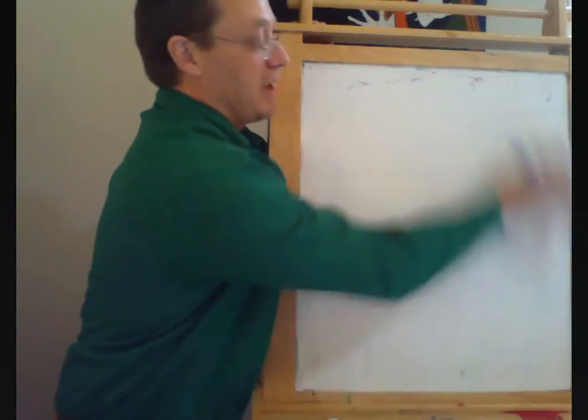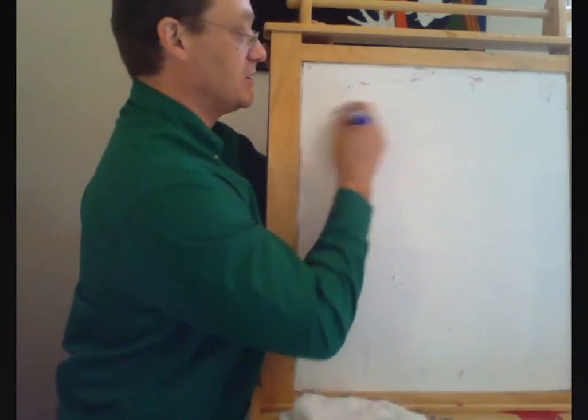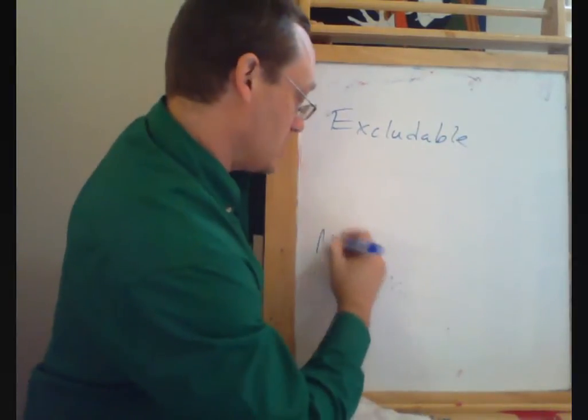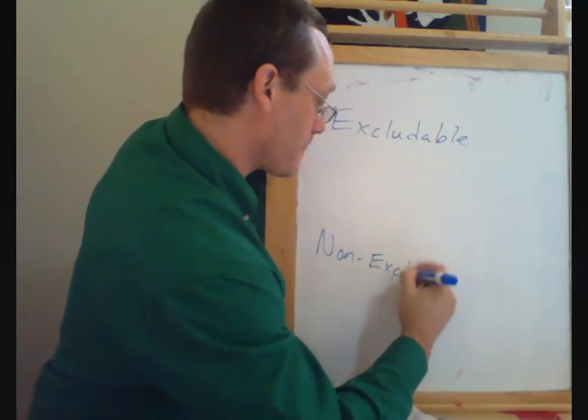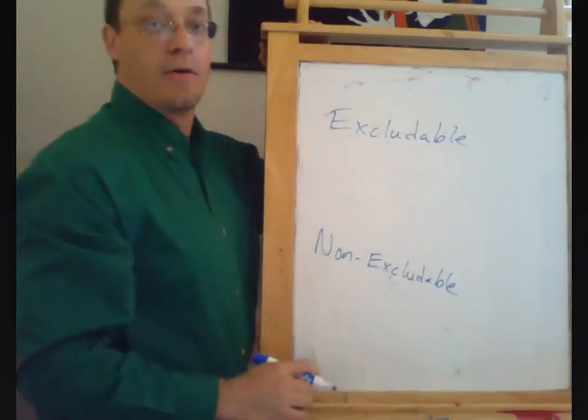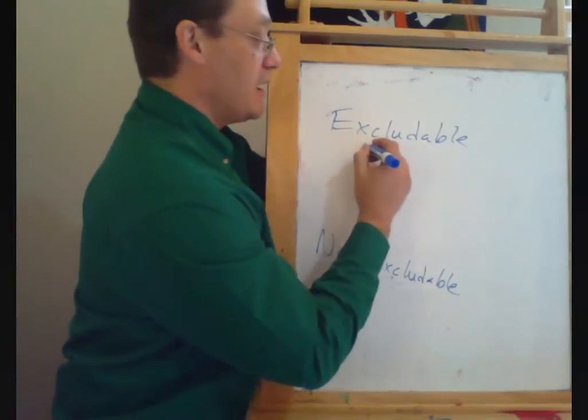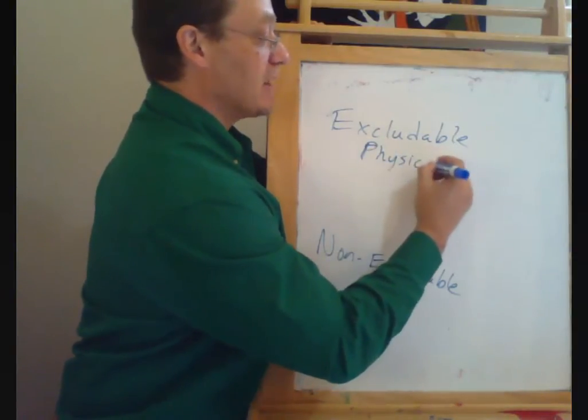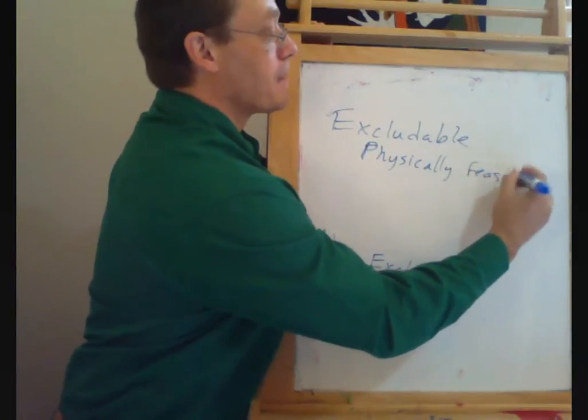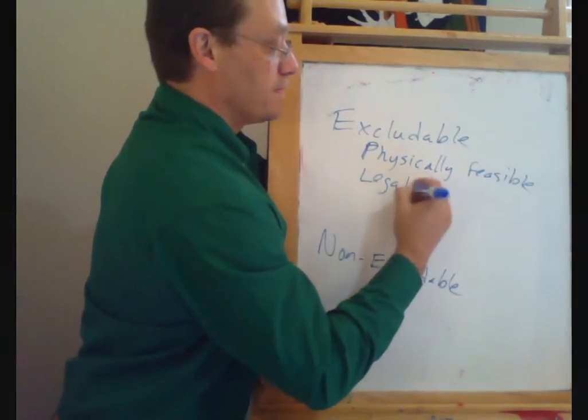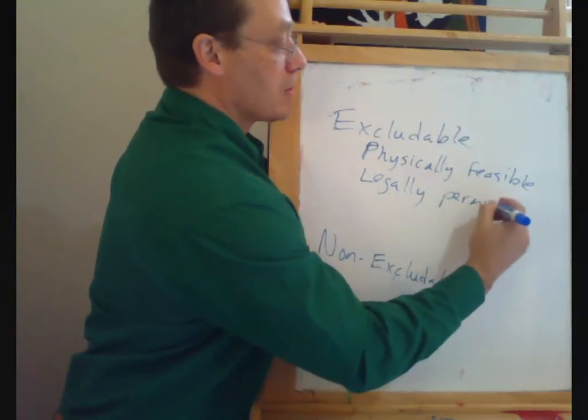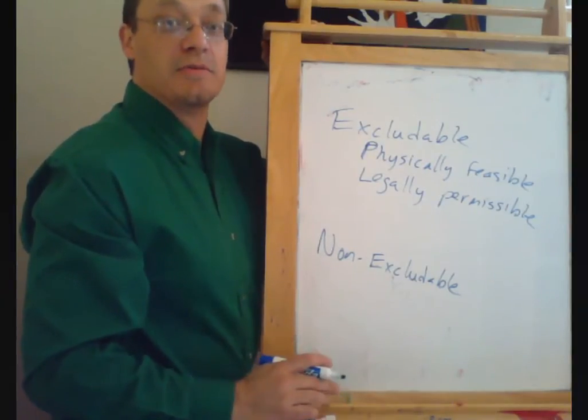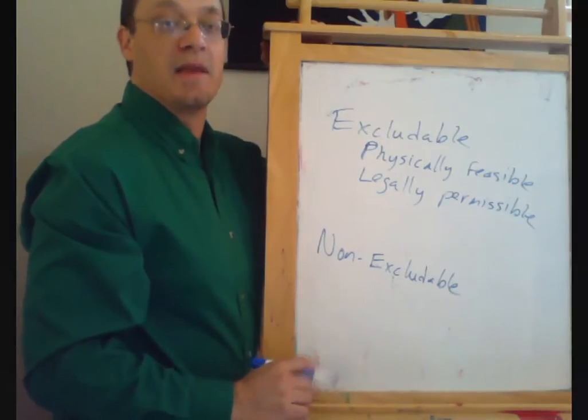The other distinction we want to look at is whether or not a good is excludable or non-excludable. So for an excludable good, it is both physically feasible or technologically feasible and legally permissible to exclude people from using it. And in particular, to exclude people from using it if they don't pay.